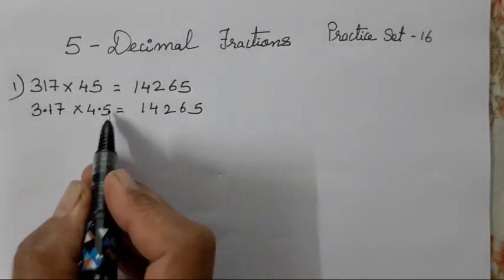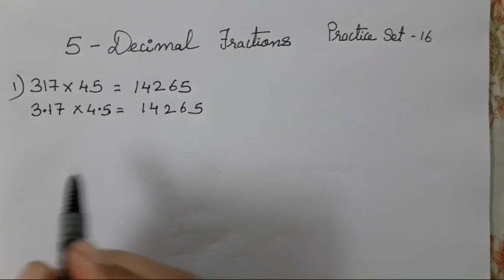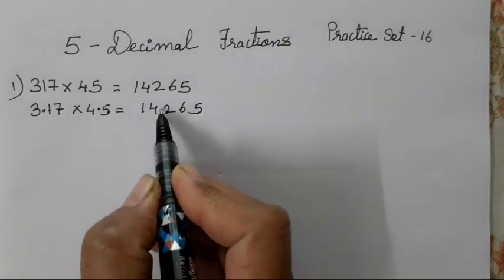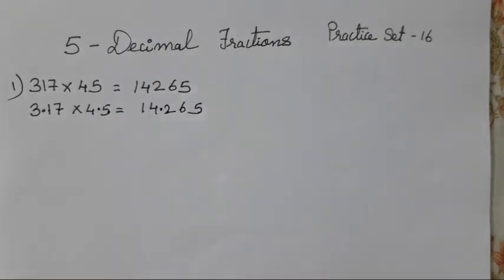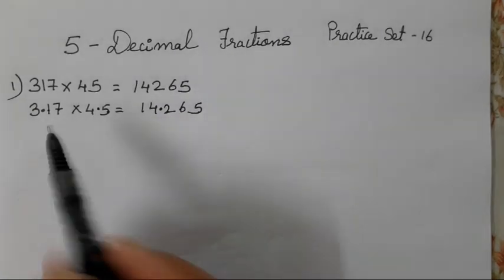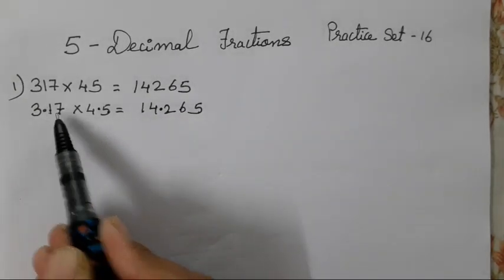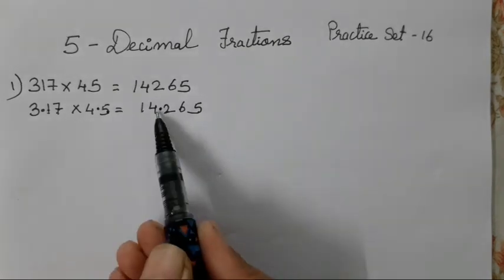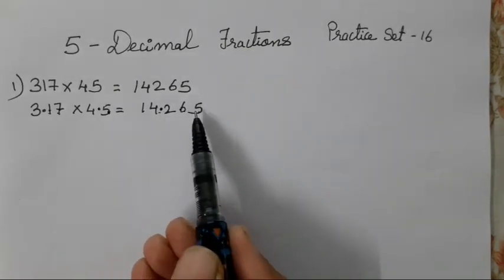Here there are 2 digits after the decimal point, and here there is 1. So 2 plus 1 equals 3. Count 1, 2, 3 from the right — your decimal point is going to come over here. You don't have to multiply, children. Only oral work you have to do. Count the decimal digits after the decimal point in both numbers, add them, and then place your decimal point that many places from the right.